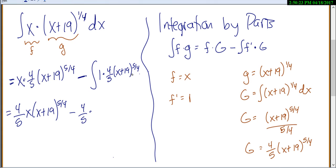You are supposed to use u substitution. Okay, go ahead and do that on your own. The answer you're going to get, though, is going to be (x plus 19) to the power of 9/4 divided by 9/4.